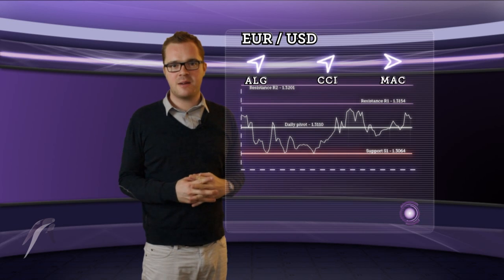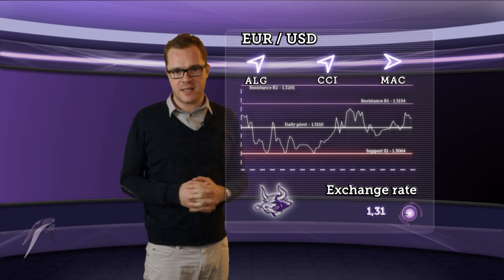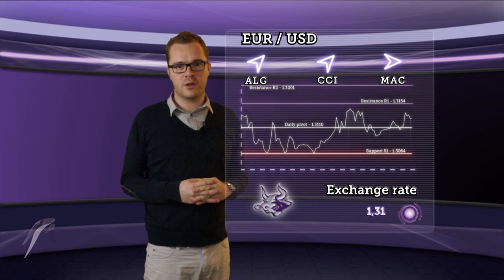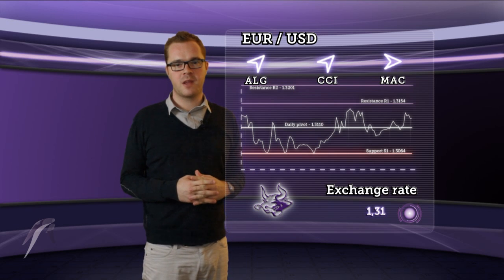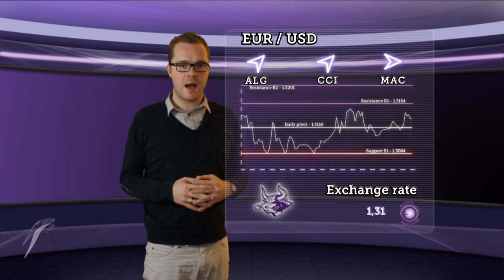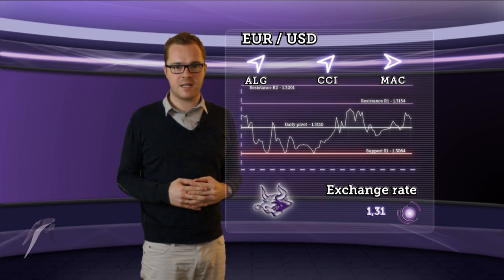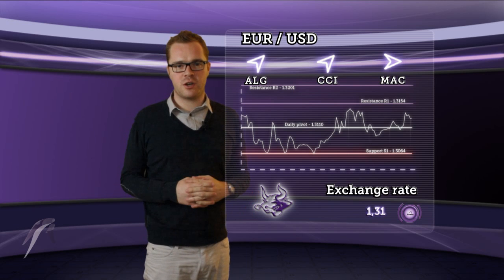Price rebounded from the daily pivot and is now testing resistance R1. A sustained rise above this level will focus on R2. On the other hand, a bounce back to the daily pivot will retest that level, and price may fall below the daily pivot with a target at S1. Overview of Axury's chosen indicators shows a bullish trend.